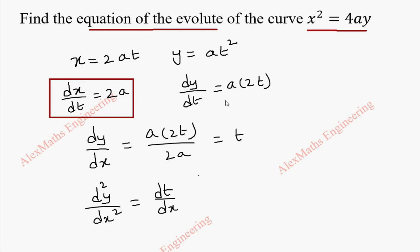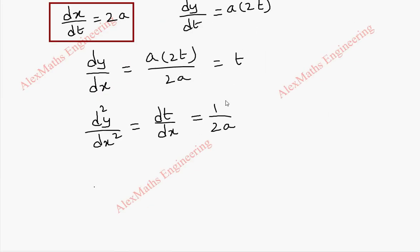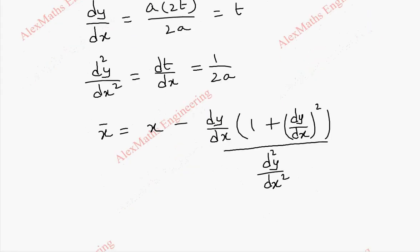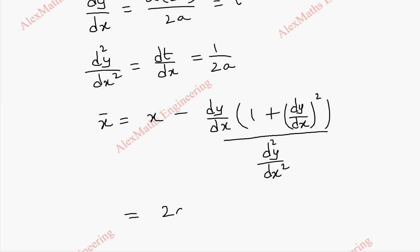So we can say dt/dx is 1/(2a). Now coming to the x̄ formula for the center of curvature: x̄ equals x minus (dy/dx) times (1 + (dy/dx)²) all divided by d²y/dx². Substituting, this will be 2at minus t into (1 + (dy/dx)²) divided by 1/(2a).